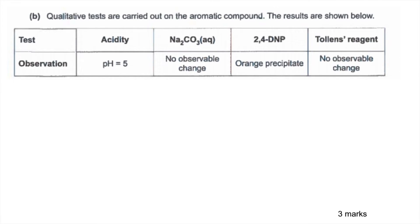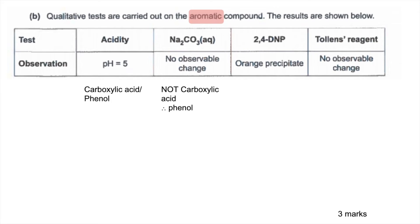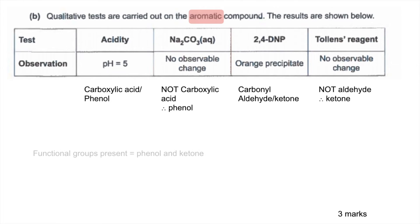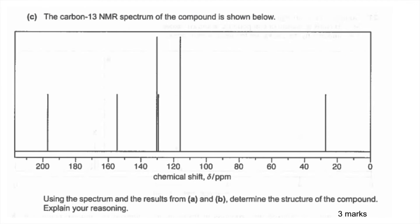For part B we've got the results from some qualitative tests on the aromatic compound. The acidity at pH 5 tells us it's either a carboxylic acid or a phenol, but the fact that there's no observable change with sodium carbonate means it can't be a carboxylic acid — so it must be a phenol. With 2,4-DNP we get an orange precipitate, so that means it's a carbonyl — either an aldehyde or ketone. Tollens' reagent gives no observable change, no silver mirror, so therefore it must be a ketone. The functional groups present are phenol and ketone.